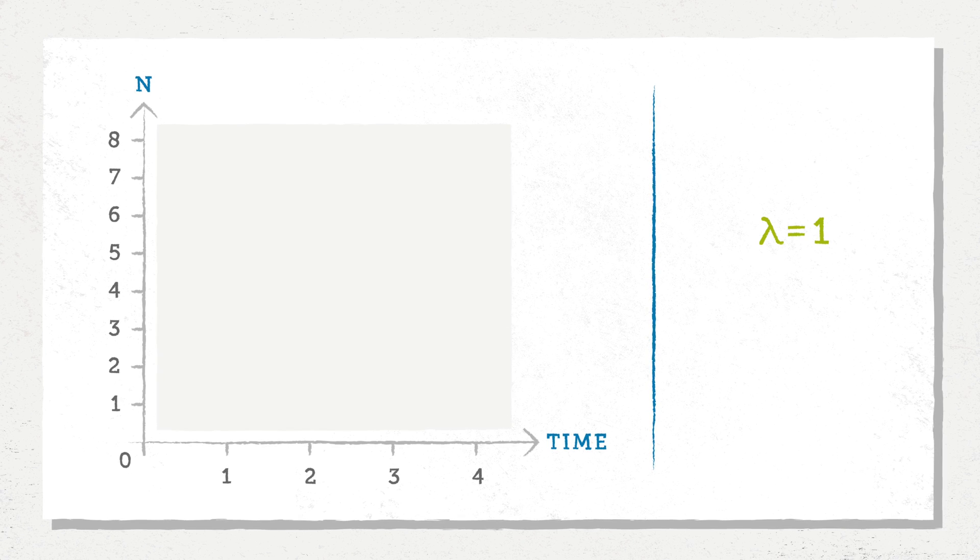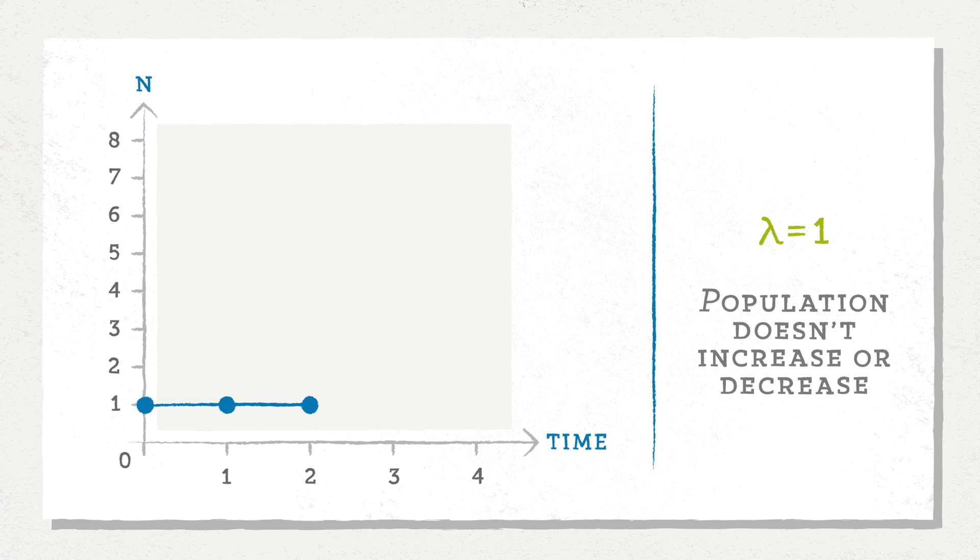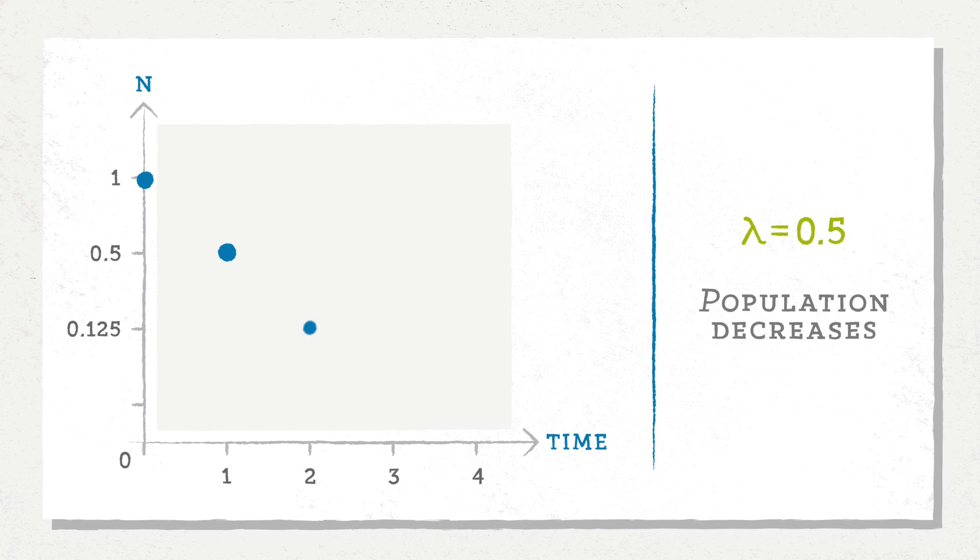Now what happens if lambda equals 1? Well, at first we have N0, N0 equals 1. Then N1 equals 1 to the power of 1 times 1, so 1. At N2, we have 1 to the power of 2, so 1 times 1, so 1. So you can see the population isn't changing over time. And then what happens when lambda is actually smaller than 1? Well, you can see the population is actually decreasing. So this very simple model allows us to say something really powerful as to whether populations will increase, be stable, or decrease over time.